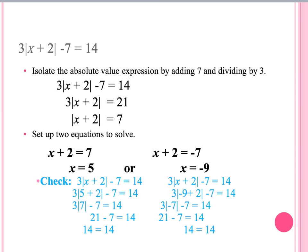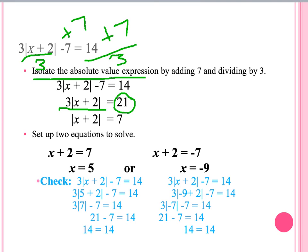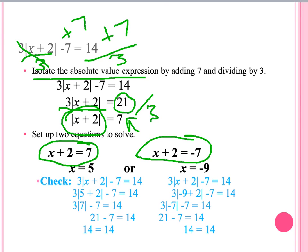Here is a more challenging absolute value expression. We start like all the others by isolating the absolute value. To do this, we add 7 to both sides, giving us 3 times the absolute value of x plus 2 equals 21. Our next step is to divide both sides by 3, leaving us with the absolute value of x plus 2 equals 7. We then set it into two equations: x plus 2 equals 7, and x plus 2 equals negative 7.